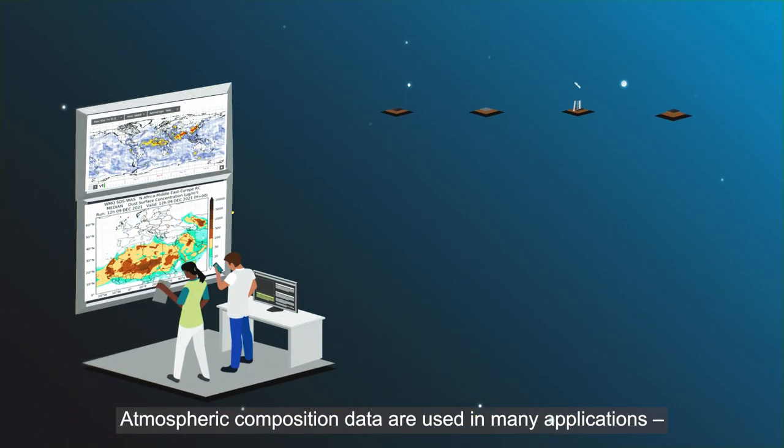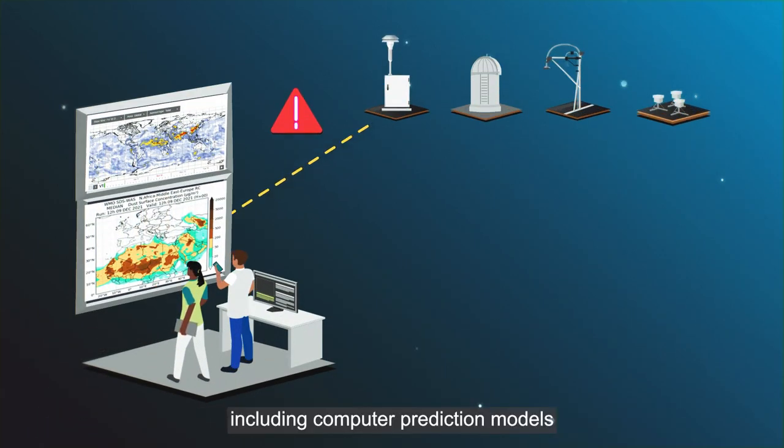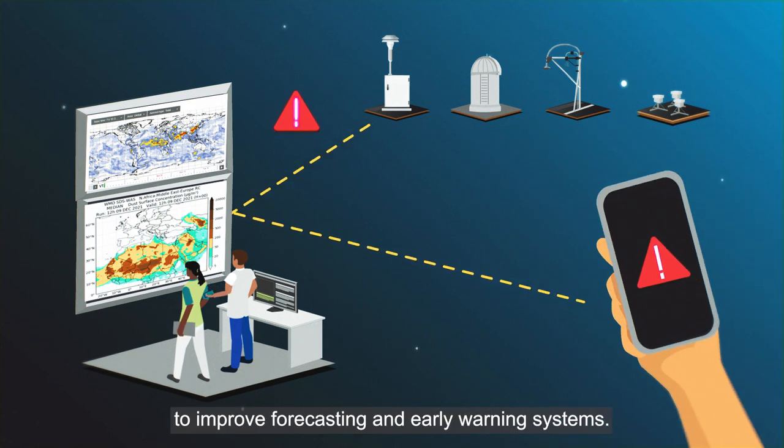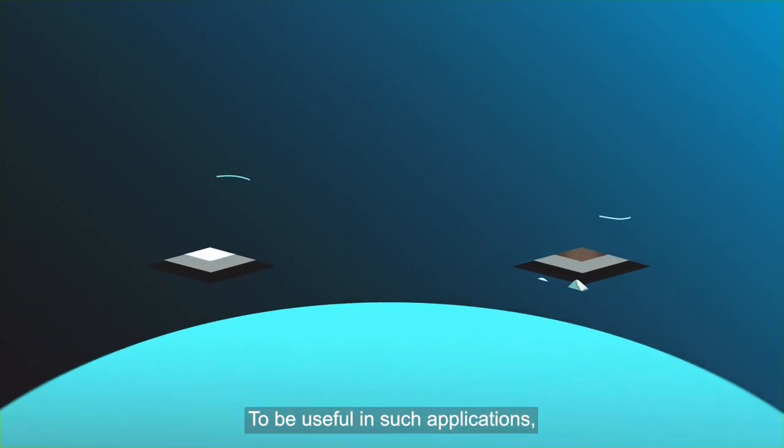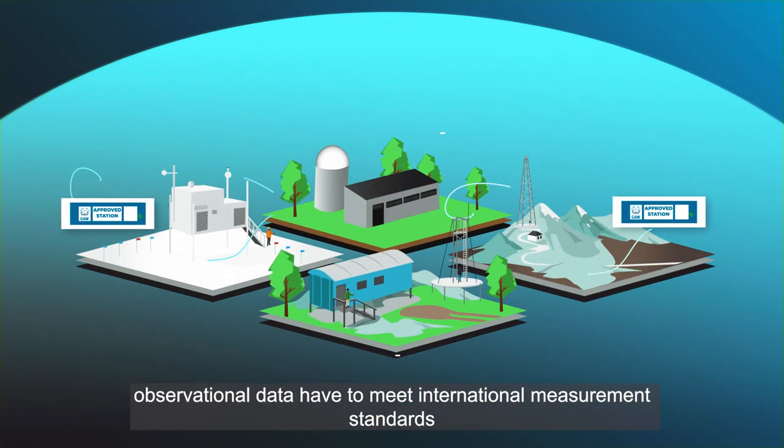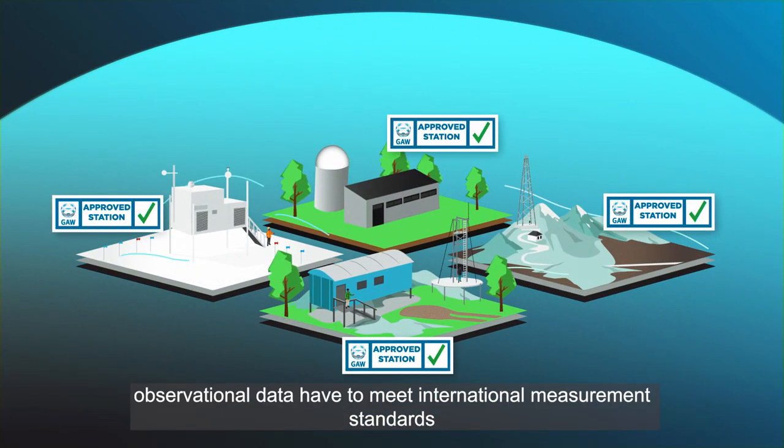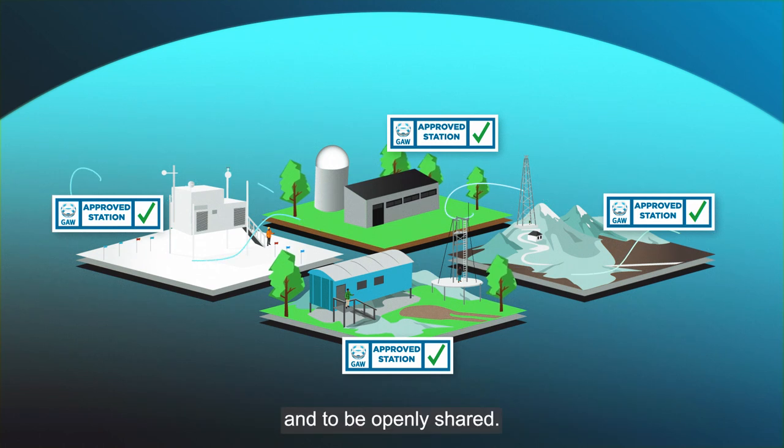Atmospheric composition data are used in many applications including computer prediction models to improve forecasting and early warning systems. To be useful in such applications, observational data have to meet international measurement standards and to be openly shared.